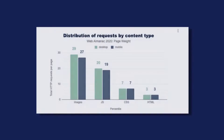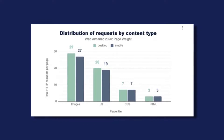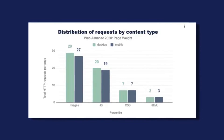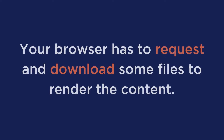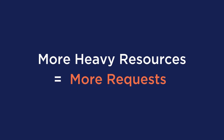According to Google, images make up the largest number of HTTP requests per page, which can slow down the loading of your website. When a visitor lands on your site, your browser has to request and download files to render the content — an HTTP request is made to the server for every single file. That means the more heavy resources you have, the more requests your browser will need to make.